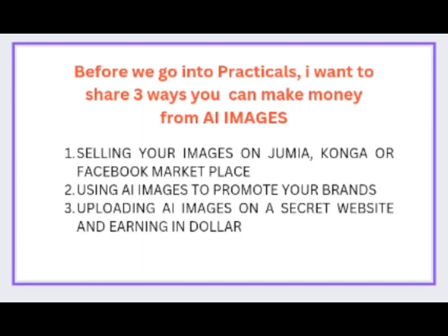So before we go into practicals, I want to share with you three ways you can make money from AI images. Number one is selling your images on Jumia, Conga, or Facebook Marketplace. You may have seen those people who sell frames in traffic. What they do is go online, use AI to generate beautiful images, take them to printers who print in large format, then frame and sell them. The last time I checked on Jumia, an average image sells for between 15,000 to 20,000, and these images don't cost much to generate — so you can see the amount of profit they are making.